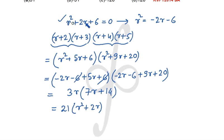So the value of r² + 2r can be substituted to -6, and that will be 21 × (-6) to get the final answer -126.